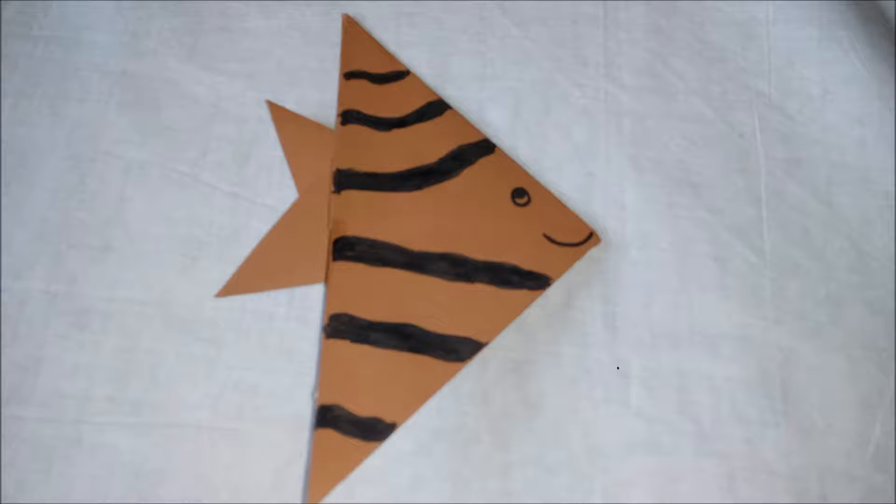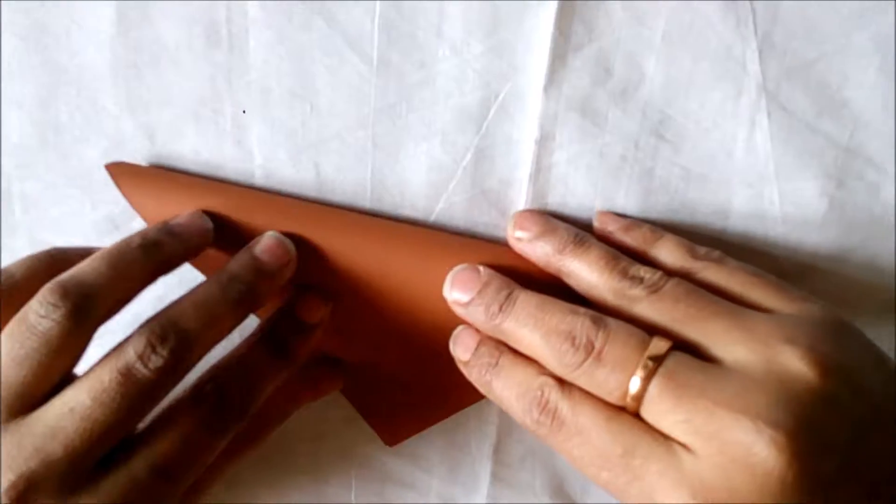Today we are going to see how to make this beautiful origami paper fish. The materials required are glue, sketch pin, and a sheet of paper.